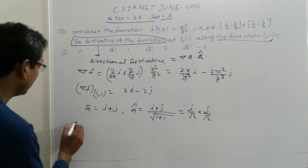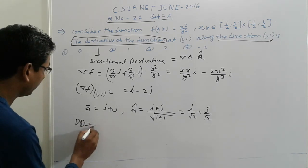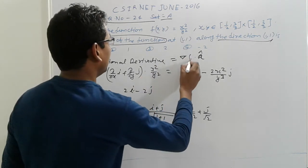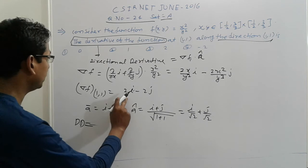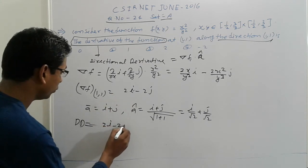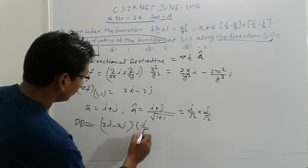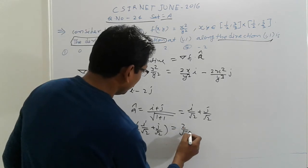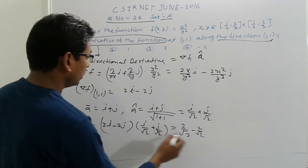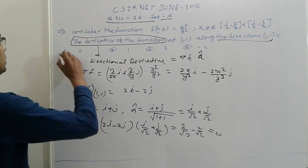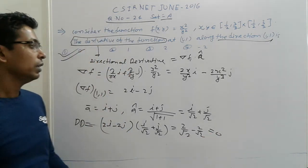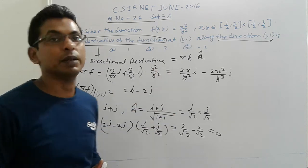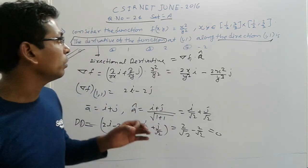Finding the directional derivative: nabla f at the point gives 2i minus 2j. Then dot product with (i/√2 + j/√2) equals 2/√2 minus 2/√2, which equals 0. So the answer is 0. Thank you, bye.